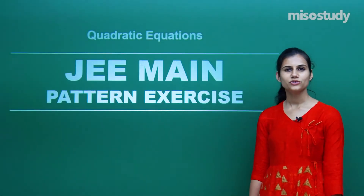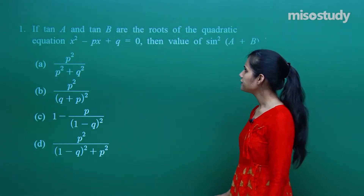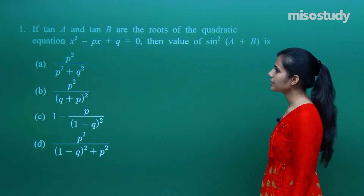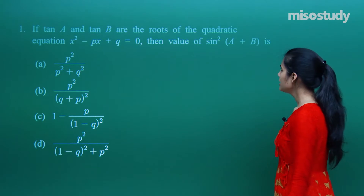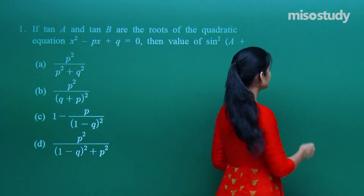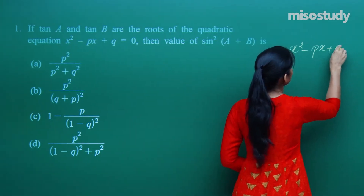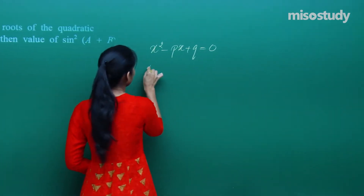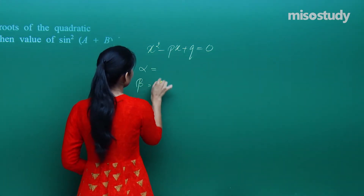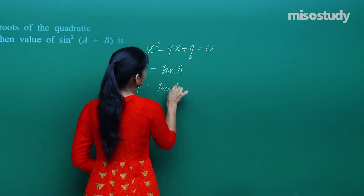Let us talk about certain questions on quadratic equations. The first question says: if tan(a) and tan(b) are the roots of the quadratic equation x² - px + q = 0, then what is the value of sin²(a+b)? The quadratic equation given is x² - px + q = 0, where alpha is tan(a) and beta is tan(b).